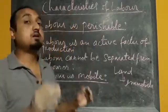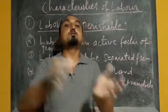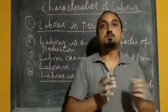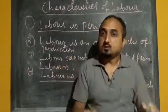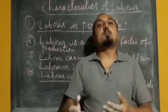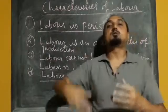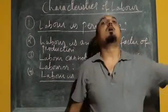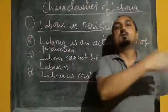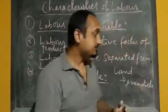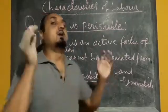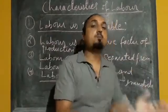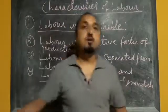Why is labour mobile? Because the labourer can be easily shifted from one place to another, and they can also change their occupation. Suppose today I am working as a teacher — if I want to change my profession, that is possible. I can go for some other type of work, I can go and work in an industry. So I am changing my profession from teaching to some other technical work. The labourer is mobile because he can change his occupation as well as move from one place to another. But that is not possible in the case of land.